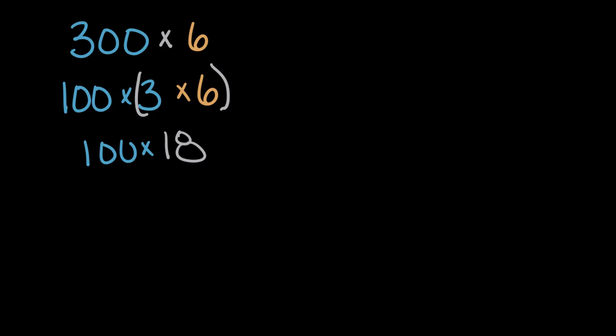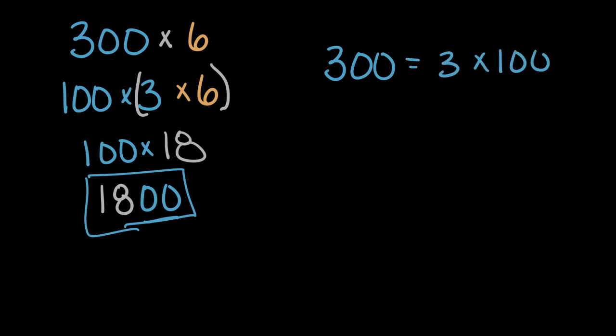So we can write that as 18. And then to show hundreds, we'll put two zeros on the end, or 1,800. Just like we saw that 300 is equal to three times 100, or three with two zeros on the end. Same thing here. 18 times 100 is 18 with two zeros on the end, or 1,800. So 300 times six equals 1,800.